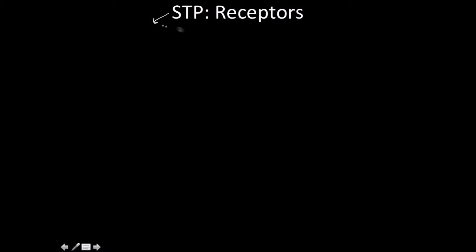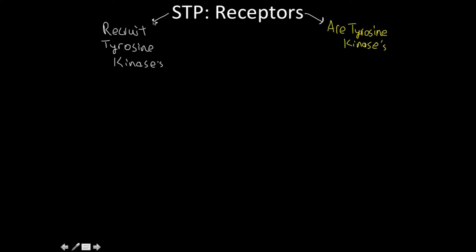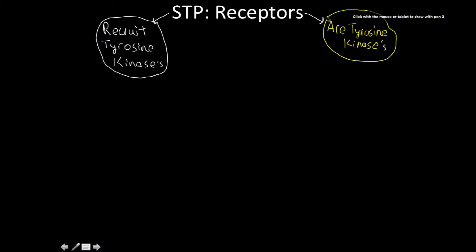There are other types of signal transduction pathway receptors other than the 7-transmembrane alpha helix — that's just the one we talked about first. I've classified these two types as: ones that are going to recruit tyrosine kinases, and ones that are tyrosine kinases.